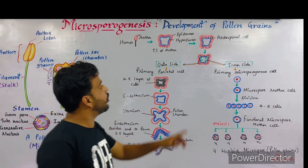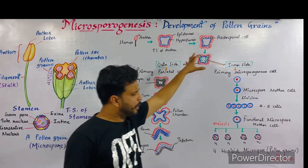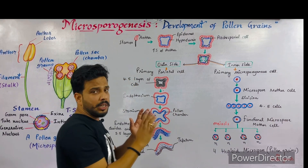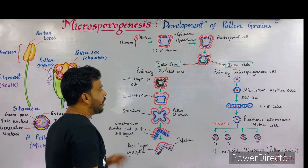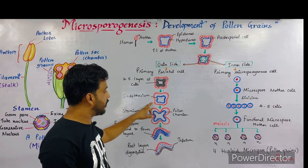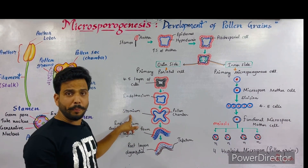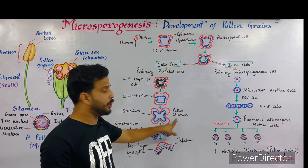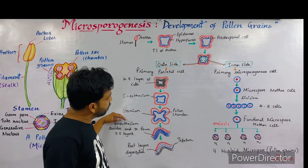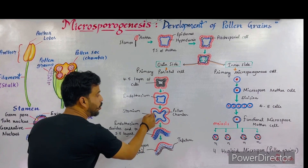The primary parietal cell divides again and again to form four to five layers of cells. In all the layers, the lowermost layer becomes thicker and is known as the endothecium — it is the main functional layer. After some time, the endothecium invaginates inward to form grooves known as stomium, and due to the formation of stomium, pollen chambers are produced. As you can see in this diagram, there are four pollen chambers.